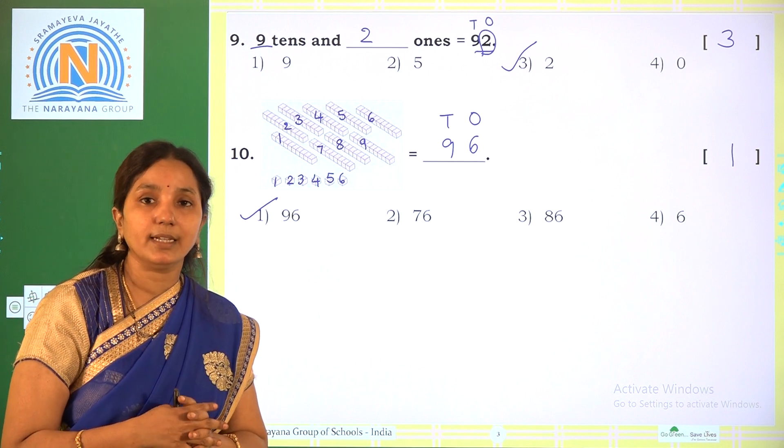Next one. 6 tens make. There are no ones. We have 6 tens and 0 ones. So what do you get? The number is 60. Which is the correct option? Option 4.